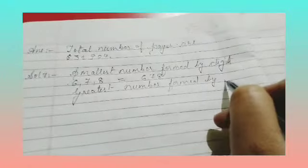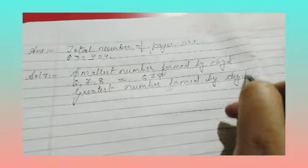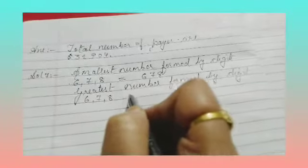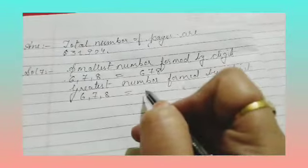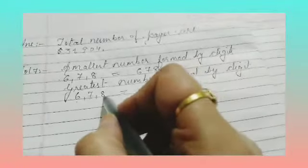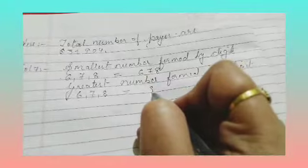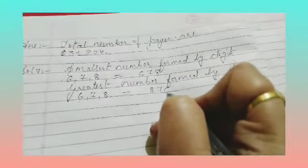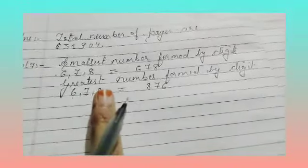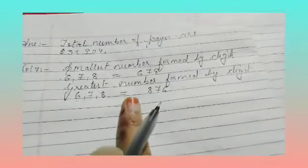Formed by digit 6, 7, 8 equals to greatest number 876. This is the greatest number that we can make using 6, 7, 8. Okay children.